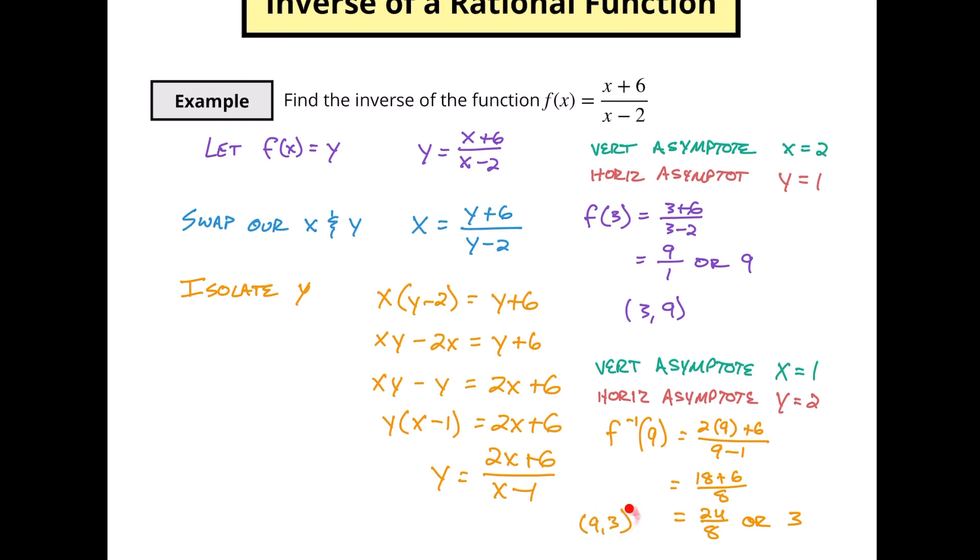So we have the coordinate of (9, 3). So this indeed has swapped as well. So we know that we have found the inverse of this function. I hope that was helpful and that it takes some of that confusion away about how to find an inverse of a rational function. If it was, make sure you give me a like and I will check you in the next video.